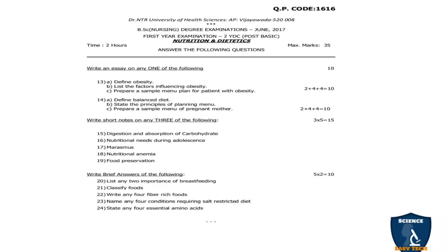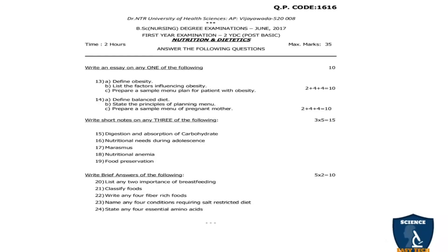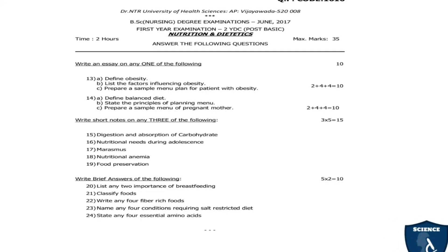Second question 2A: Define balanced diet — 2 marks. 2B: State the principles of planning menu — 4 marks. 2C: Prepare a sample menu plan for a pregnant mother — 4 marks. 2 + 4 + 4 = 10 marks. Write short notes on any 3 of the following, 3 × 5 = 15 marks.